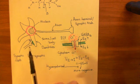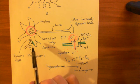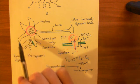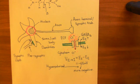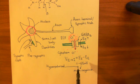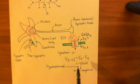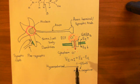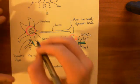In order to generate an action potential in the postsynaptic neuron, you need to depolarise the electrical potential difference. So hyperpolarisation is doing the exact opposite of what you need to generate an action potential.